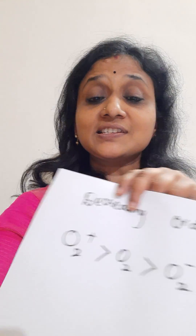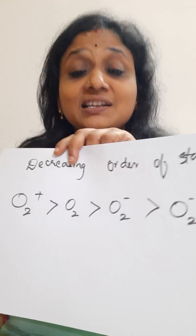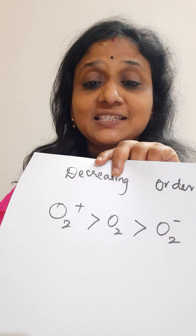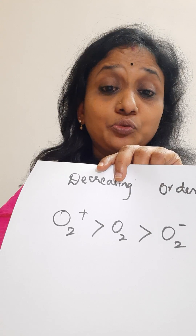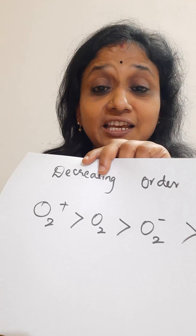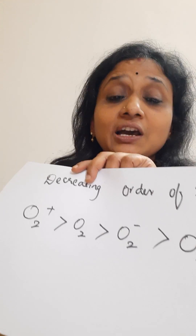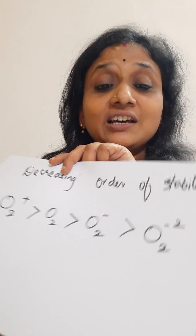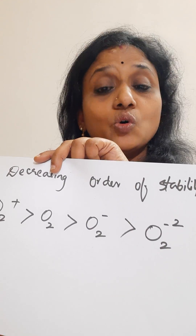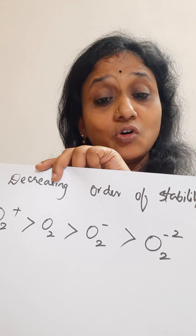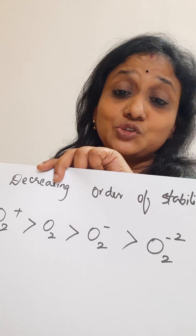O2+ is having the maximum bond order of 2.5. Then comes O2 with bond order 2, then O2⁻ with 1.5, and O2²⁻ with 1. Bond order is directly related to stability, so the stability decreases in that order.